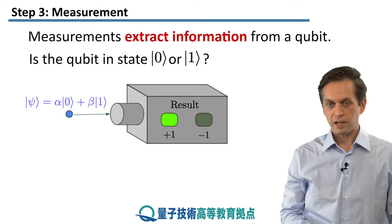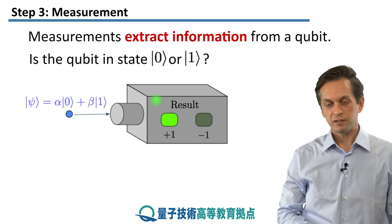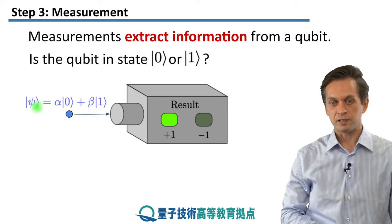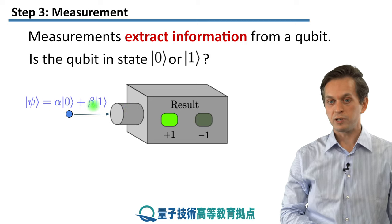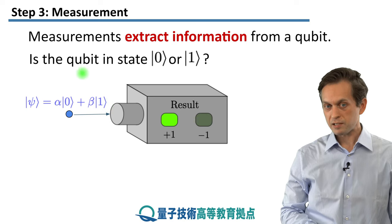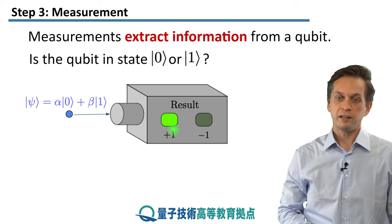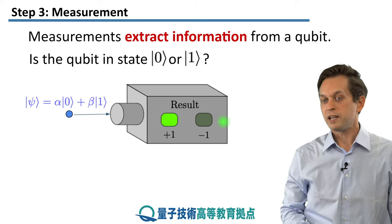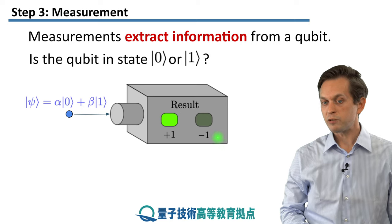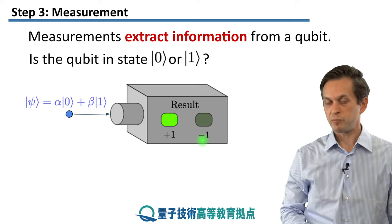You can think of a measurement as a big box, and you feed it your prepared state. Here I'm considering a general state given by alpha|0> plus beta|1>. What the measurement does is ask this question for you, and then it tells you it's in a +1 or it's in the other state. Usually, you only get two values out of a measurement device, and we're going to represent them by plus 1 and minus 1.